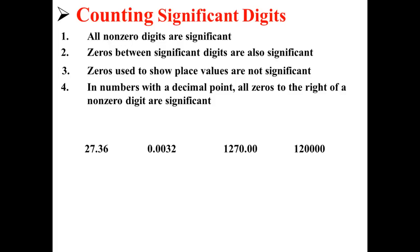Let's try doing this with four different examples. We'll start with the number 27.36. 27.36 has four significant digits because, remember, all non-zero digits are significant.